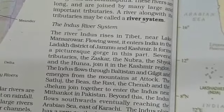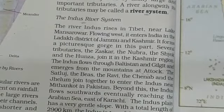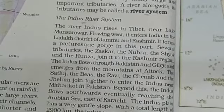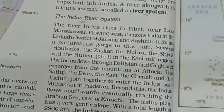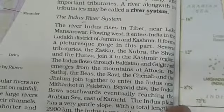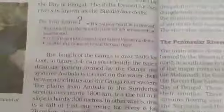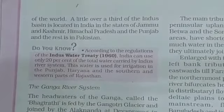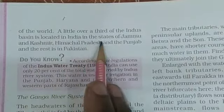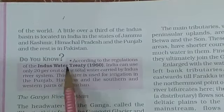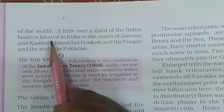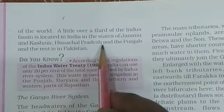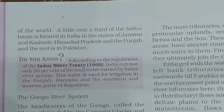The Indus plain has a very gentle slope. With a total length of 2900 km, the Indus is one of the longest rivers of the world. A little over a third of the Indus basin is located in India, in the states of Jammu and Kashmir, Himachal Pradesh, and Punjab, and the rest is in Pakistan.